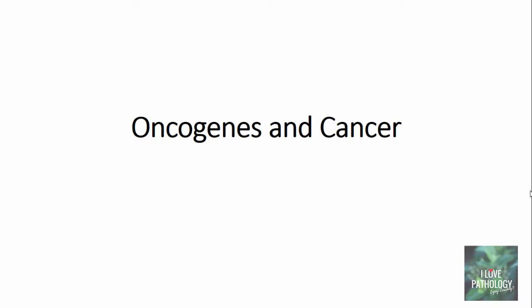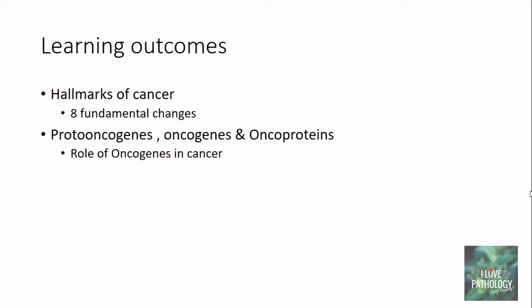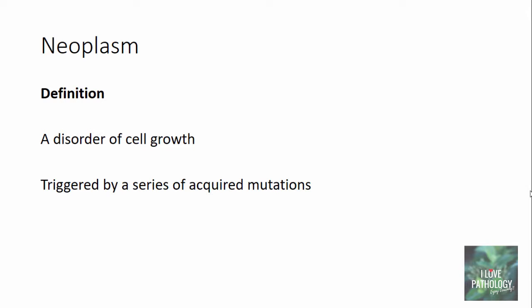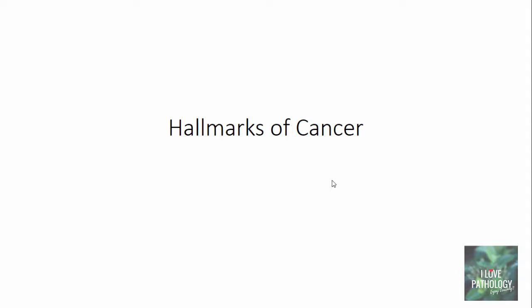Welcome to this short tutorial from Pathology Made Simple at I Love Pathology. Today's topic is oncogenes and cancer. The learning outcomes for today are: we will study the hallmarks of cancer, understand the eight fundamental changes which occur in cell physiology, and discuss proto-oncogenes, oncogenes, and the role of oncogenes in cancer. A neoplasm is defined as a disorder of cell growth triggered by a series of acquired mutations affecting a single cell and its clonal progeny.